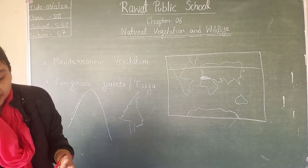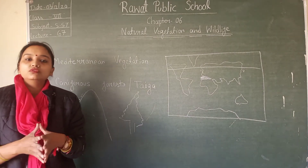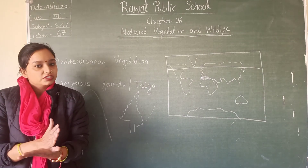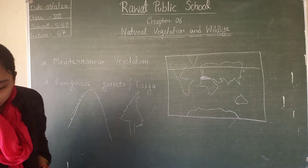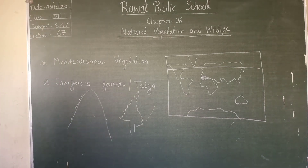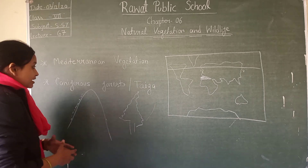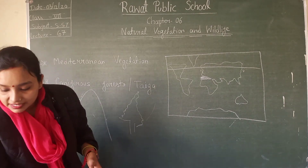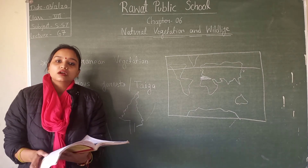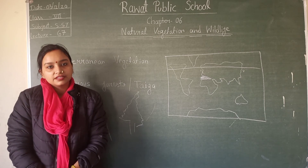Looking ahead to the next class, we have seen that there are two types of grasslands: tropical grasslands and temperate grasslands. We will discuss the differences between them in the next class and try to complete this chapter in detail. That's it for today's class. Thank you.